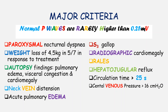Let's summarize our major criteria: N for neck, P for paroxysmal nocturnal dyspnea, W for weight loss, A for autopsy findings, V for vein — so N plus V gives us neck vein distension. E for acute pulmonary edema, S for the S3 gallop, the first R for radiographic cardiomegaly, the second R for rales, H for hepatojugular reflex, 0.25 for a circulation time greater than 25 seconds, and the last V for central venous pressure. If a patient meets two or more of these criteria, a diagnosis of heart failure can be made.